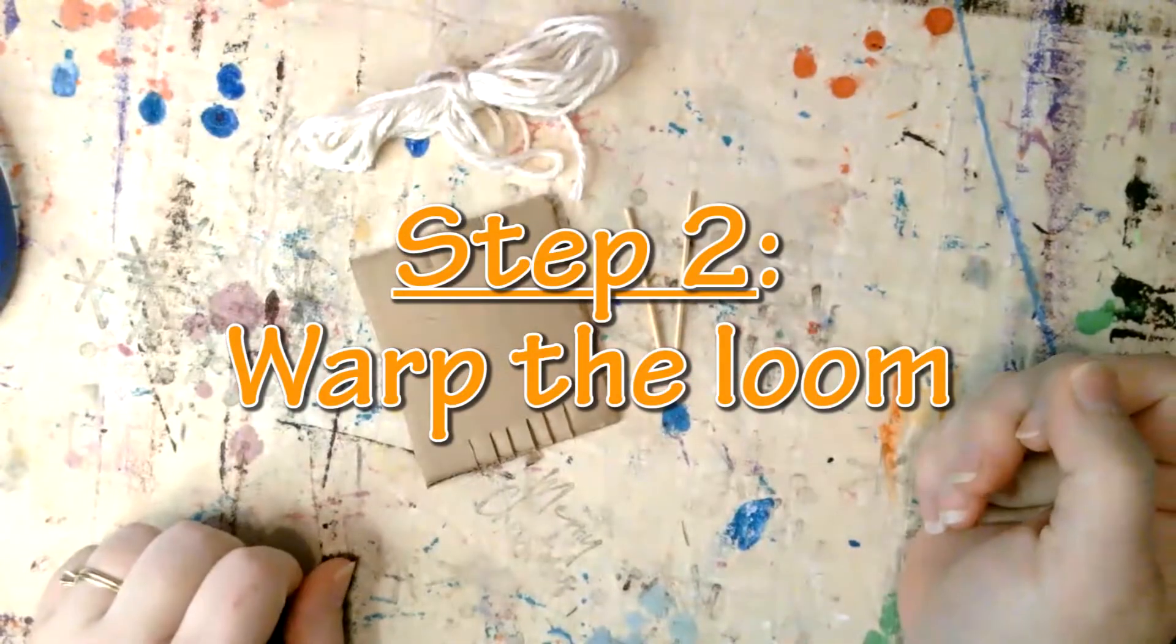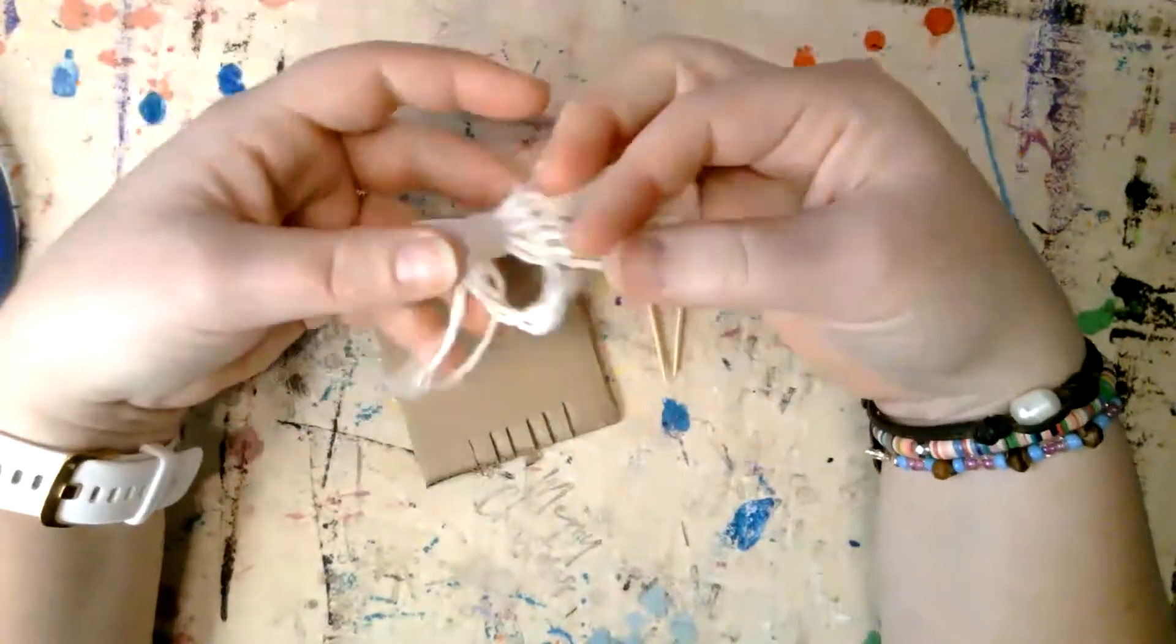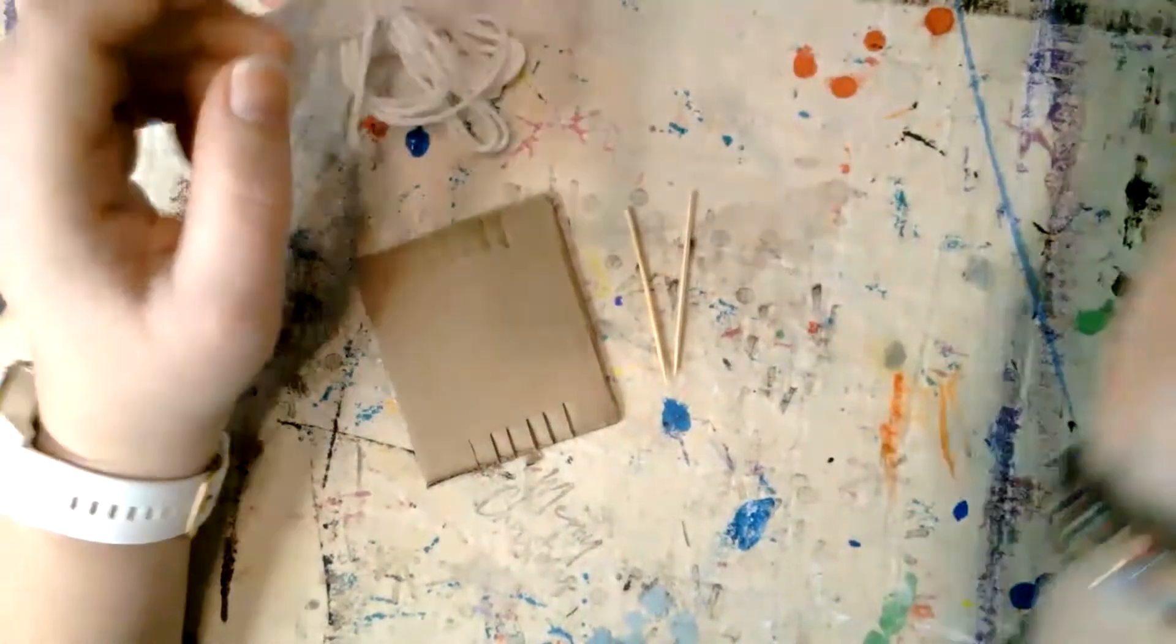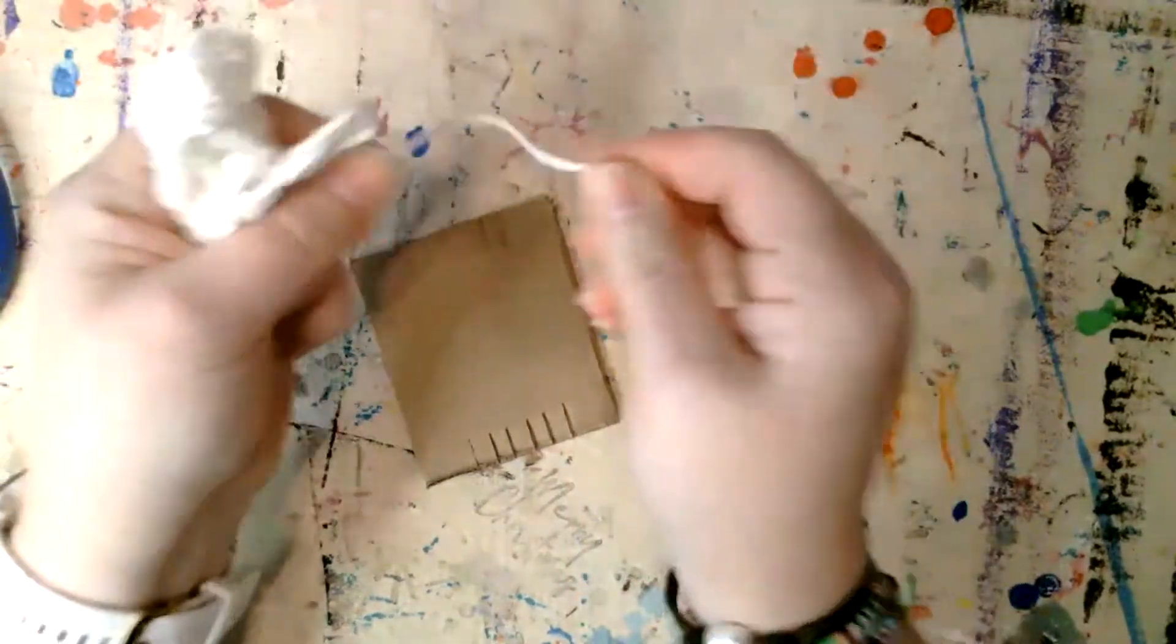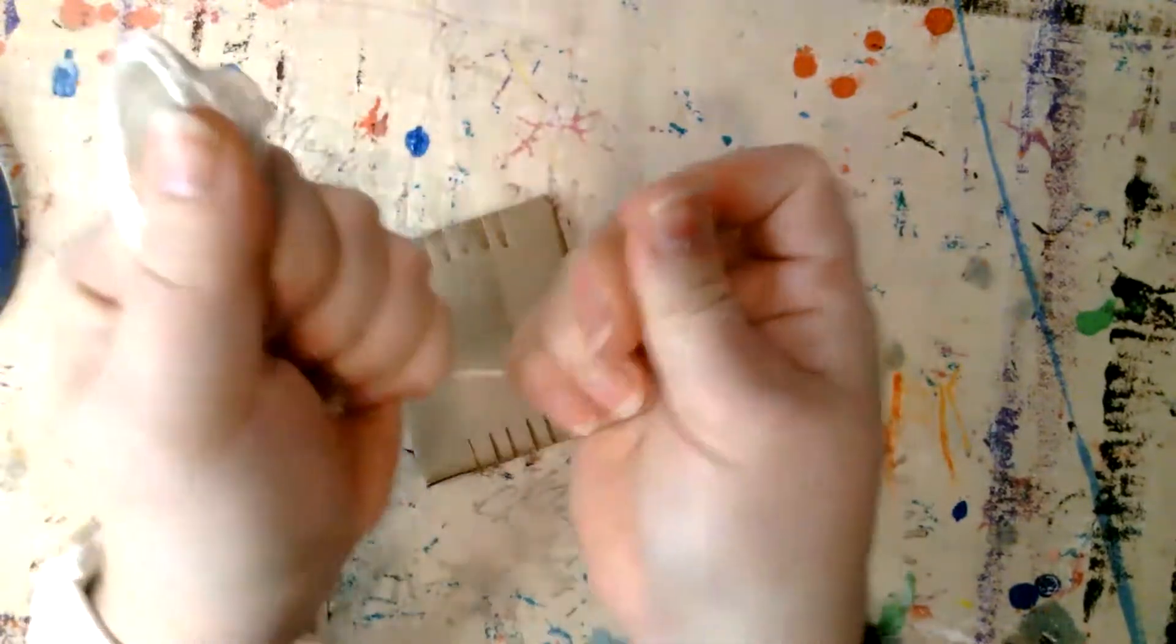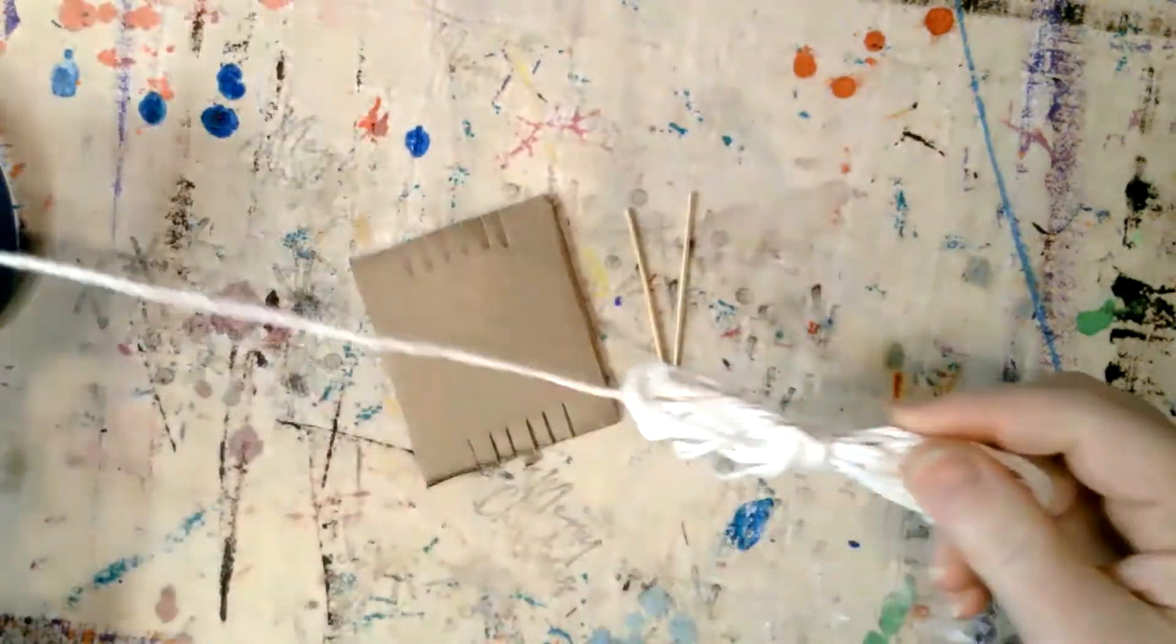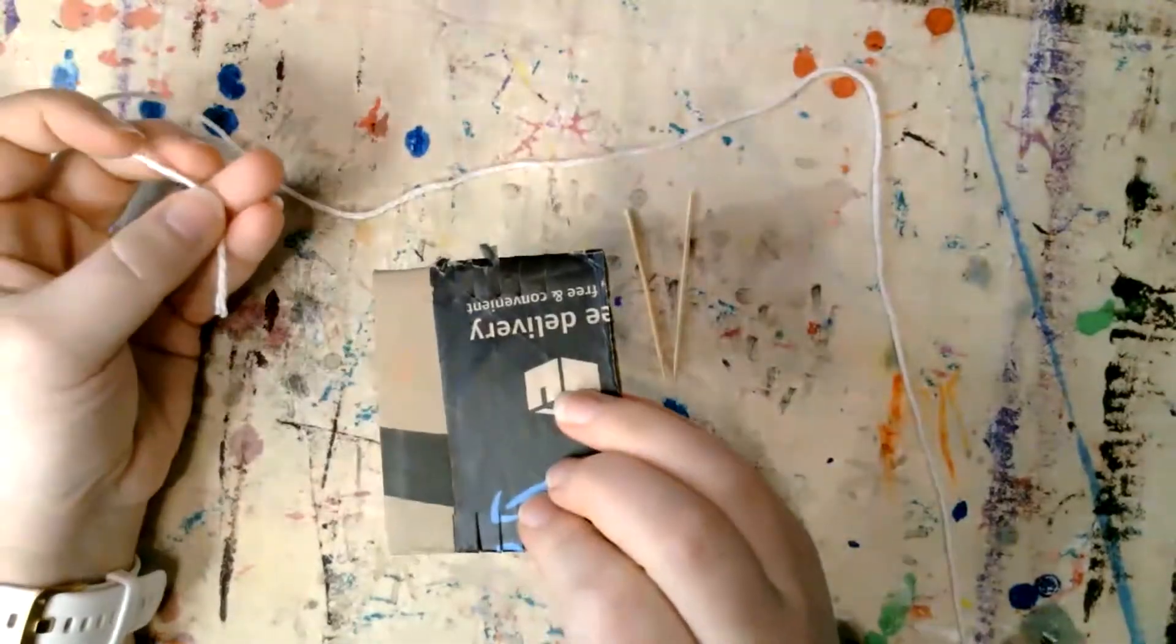Now it's time for warping. You will need about five yards of yarn. I use Lily Sugar and Cream because it's cheap and it's cotton. The main thing is you don't want your yarn to be stretchy. You want it to be pretty tough because you're going to put a lot of tension on it. Flip your loom over.